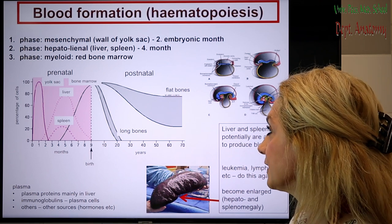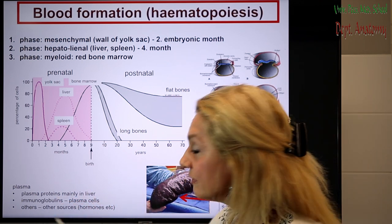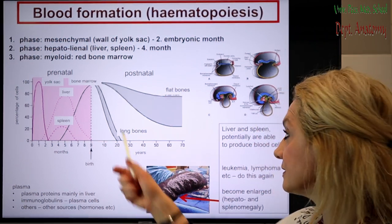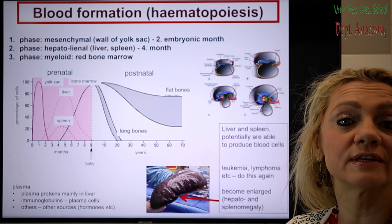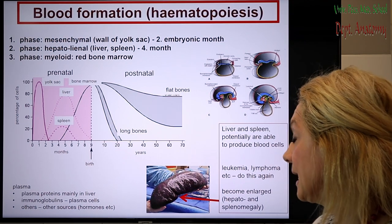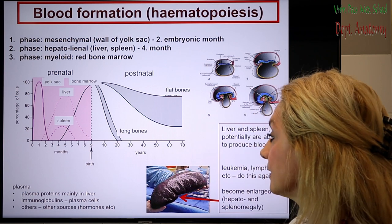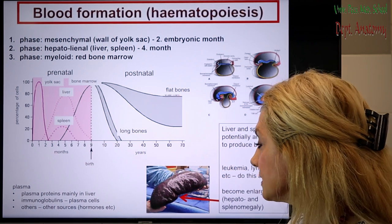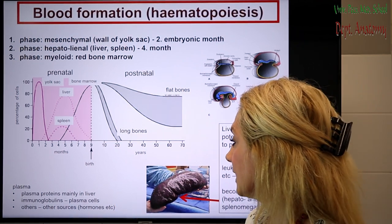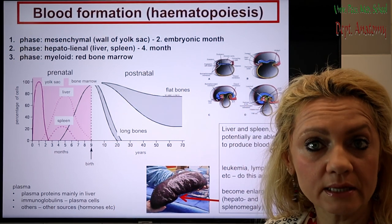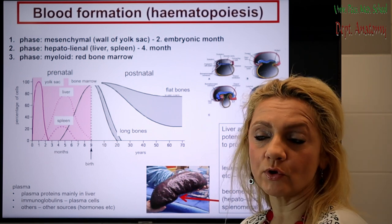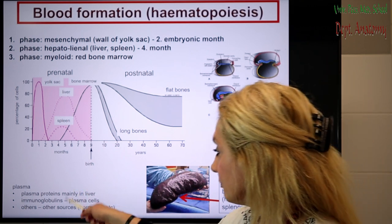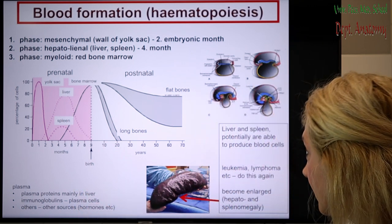We should also briefly mention the other component: plasma formation. What I was talking about so far was the cells of the blood. The plasma has many different components; the plasma proteins are mainly produced in the liver. Immunoglobulins are produced in the plasma cells, and we have many other components such as hormones in the endocrine glands.